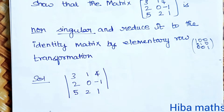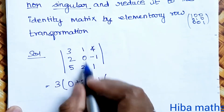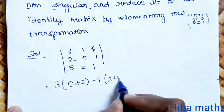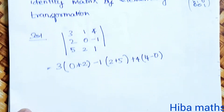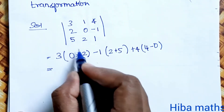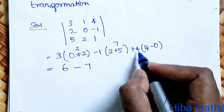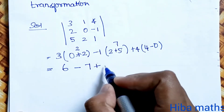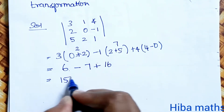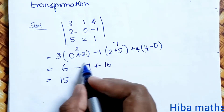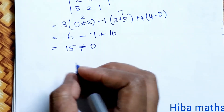For the matrix [3 1 4 / 2 0 -1 / 5 2 1], we find the determinant: 3 into (0 minus 2) minus 1 into (2 plus 5) plus 4 into (4 minus 0). That is 3(minus 2) minus 1(7) plus 4(4), giving minus 6 minus 7 plus 16, which equals 15. Since 15 is not equal to 0, the given matrix is non-singular.